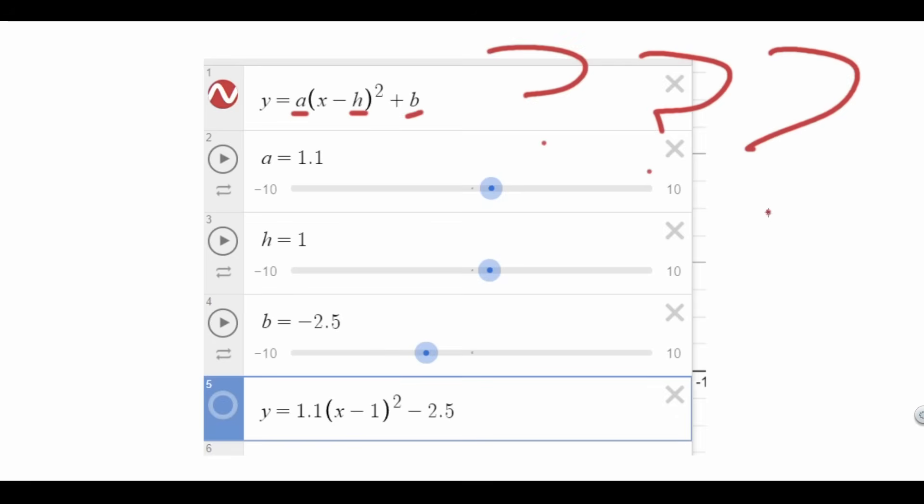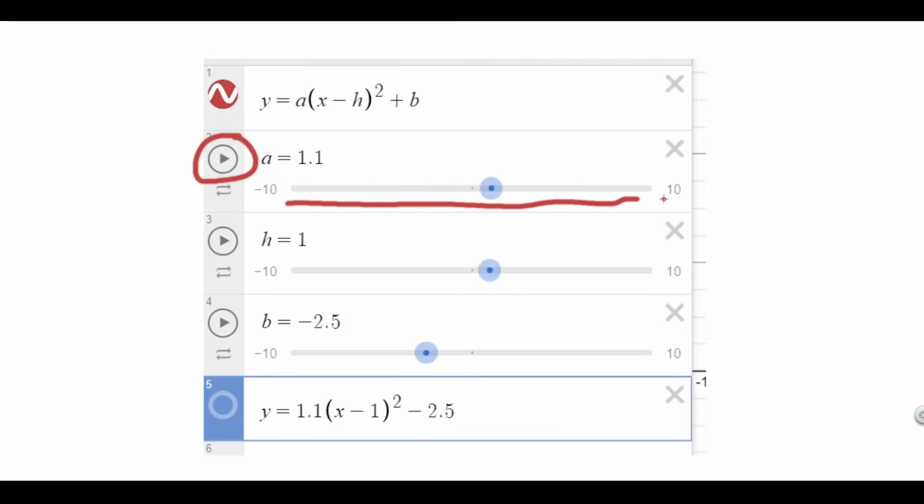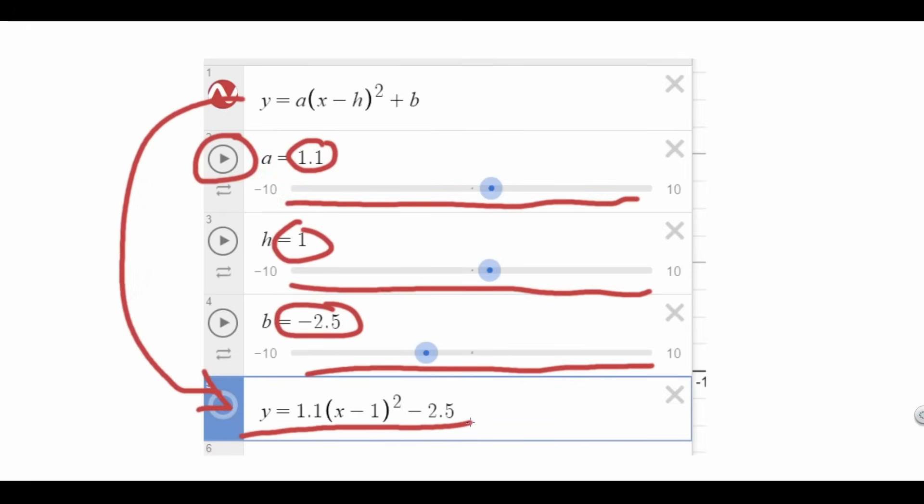What are all these letters inside the functions? Any letter that is not an x or y represents a number. For example, we see that this function has a, h, and b. Using these sliders we can input values where a is 1.1, h is 1, and b is negative 2.5. This means the same thing as the function at the bottom.